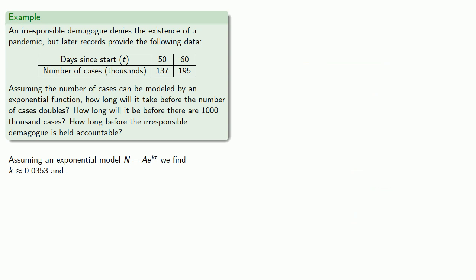Now we can also solve for A, because we know that at day 60, there are 195,000 cases, and since we have k, we can substitute these into our model and solve for A.